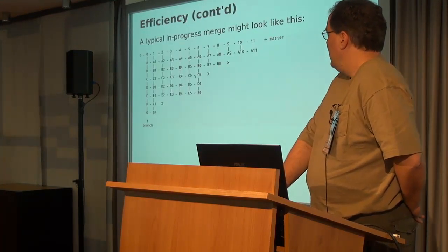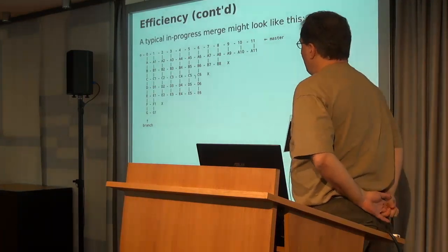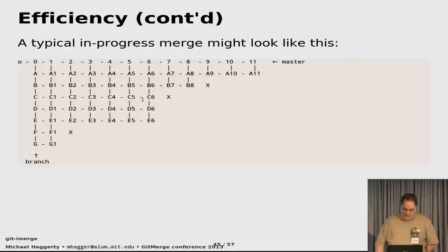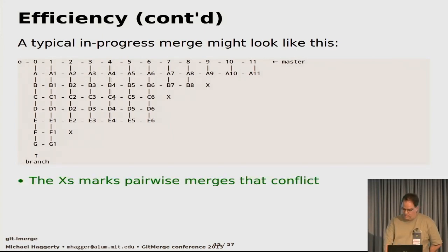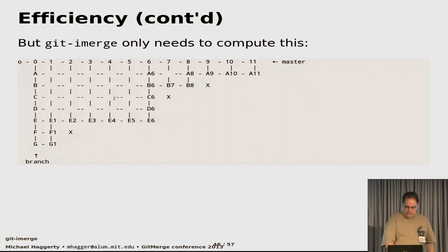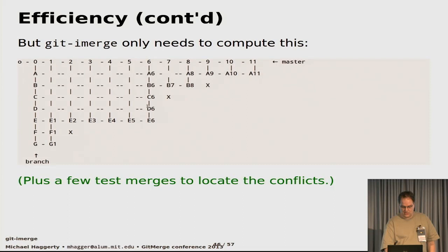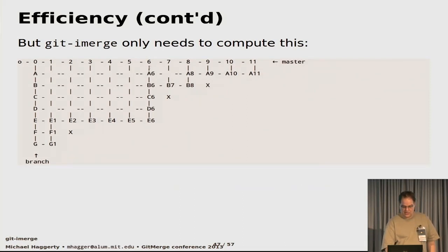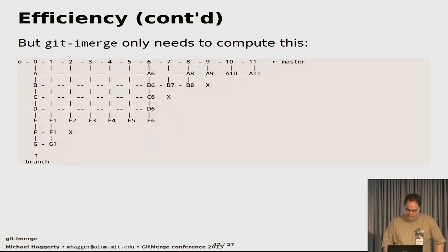A quick word about efficiency: the tool doesn't actually have to do all of the incremental merges between master and branch. There's an algorithm based on bisection that can find exactly where the conflicts are. Once it knows where the conflicts are, it just fills in the boundary of the rectangle that goes to the conflict. So this is not nearly as processor-intensive or resource-intensive as it might seem.